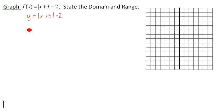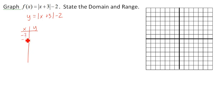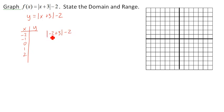So let's go ahead and plug in some values for x and y. We're doing a little bit of guesswork, but let's do negative 2, negative 1, 0, 1, and 2. So if I do negative 2 plus 3 minus 2: negative 2 plus 3 is 1, the absolute value of 1 is 1, minus 2 is negative 1.